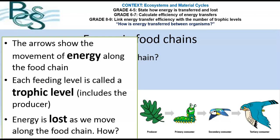So on this food chain here, the first trophic level would be the producer. Then we'd have the second trophic level, which is the primary consumer, etc. And what we're going to talk about today is where that energy may be lost as we move along the food chain.